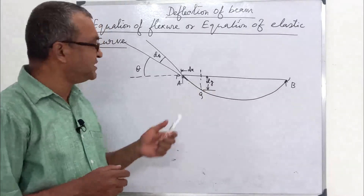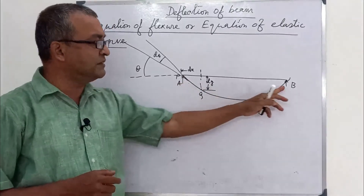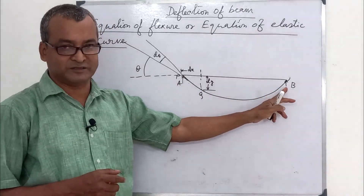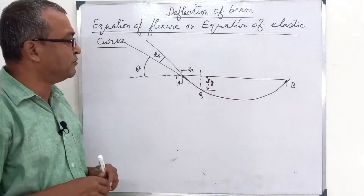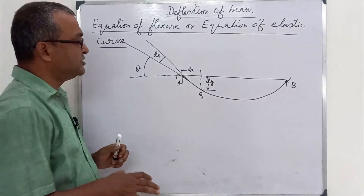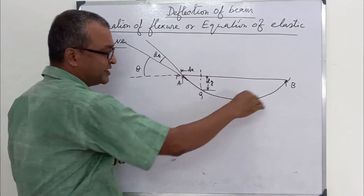Simply supported beam. A simply supported beam means that there are two simple supports. Consider beam ARB. The load will be taken in this way.